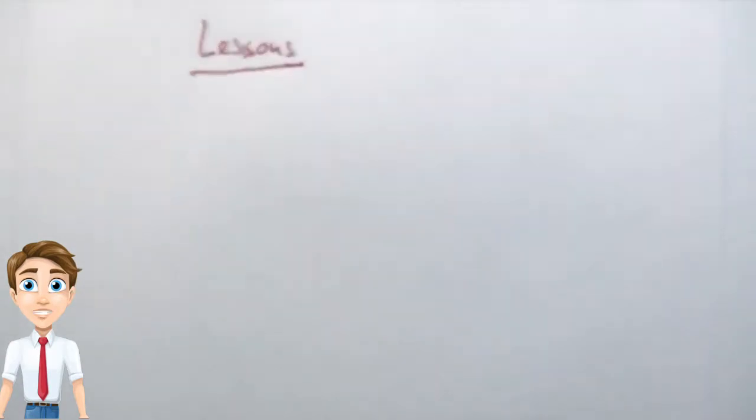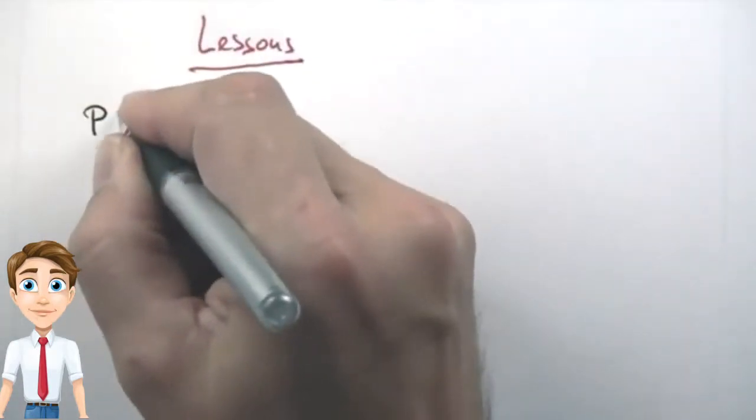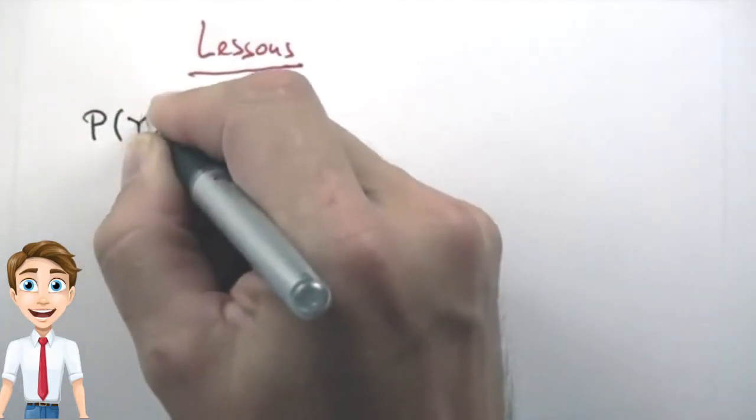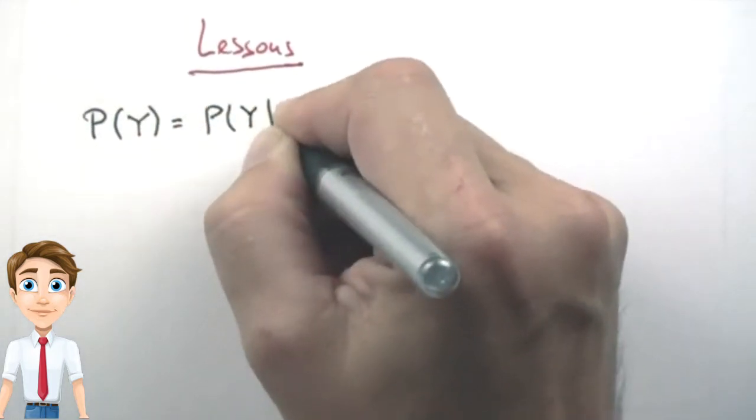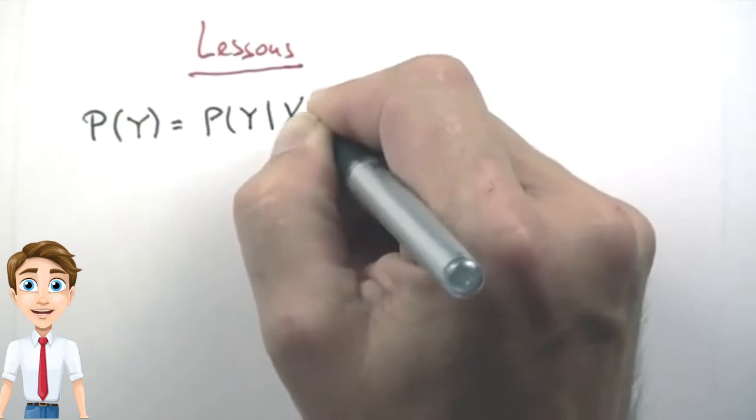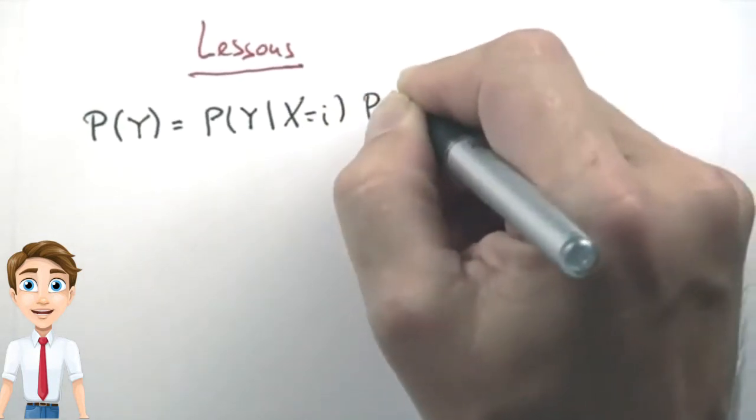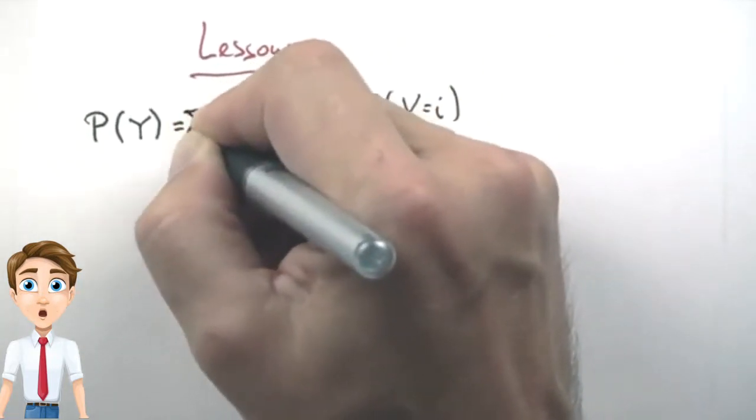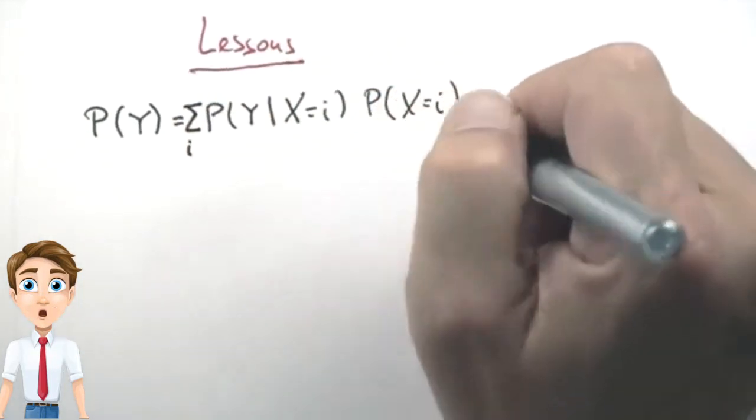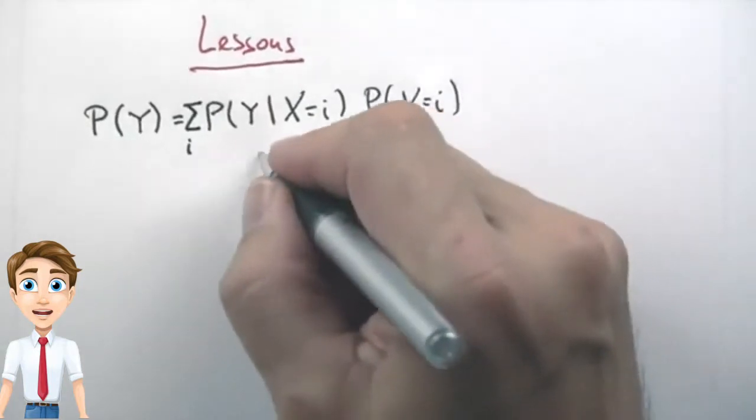So we actually just learned some interesting lessons, that the probability of any random variable Y can be written as probability of Y given that some other random variable X assumes value i times probability of X equals i summed over all possible outcomes i for the random variable X. This is called total probability.